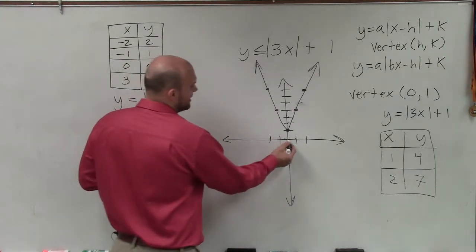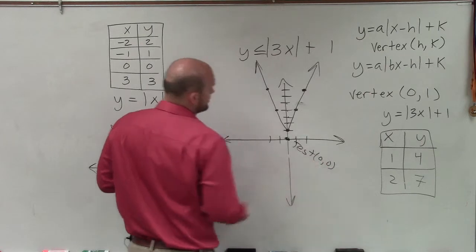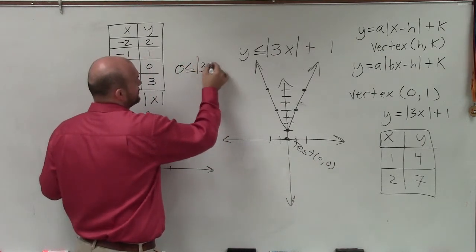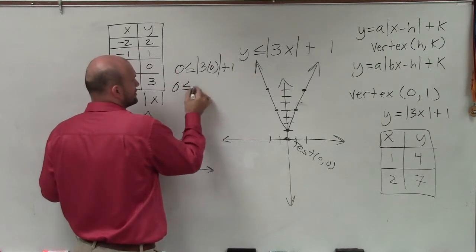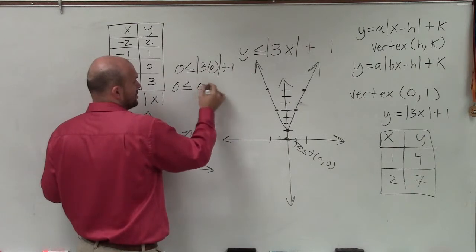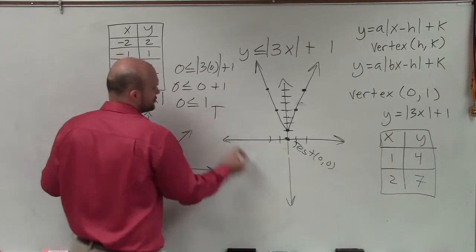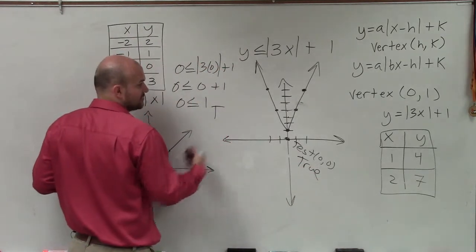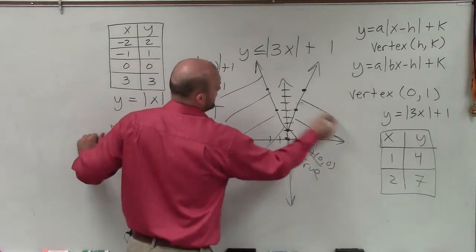Now to determine where I shade, we're just going to go through a test point. So I'm going to use my test point 0, 0. So therefore, I have 0 is less than or equal to absolute value of 3 times 0 plus 1. Well, 0 times 3 is 0. Absolute value is 0 plus 1. 0 is less than or equal to 1. And that is true. So since our test point, which is outside our absolute value, is true, we're going to shade on the outside of our absolute value symbol.